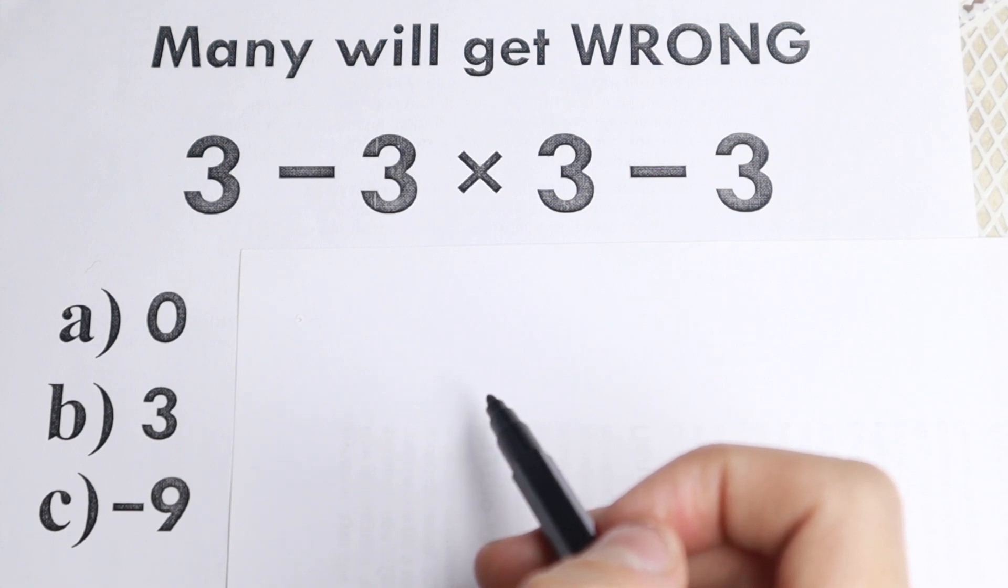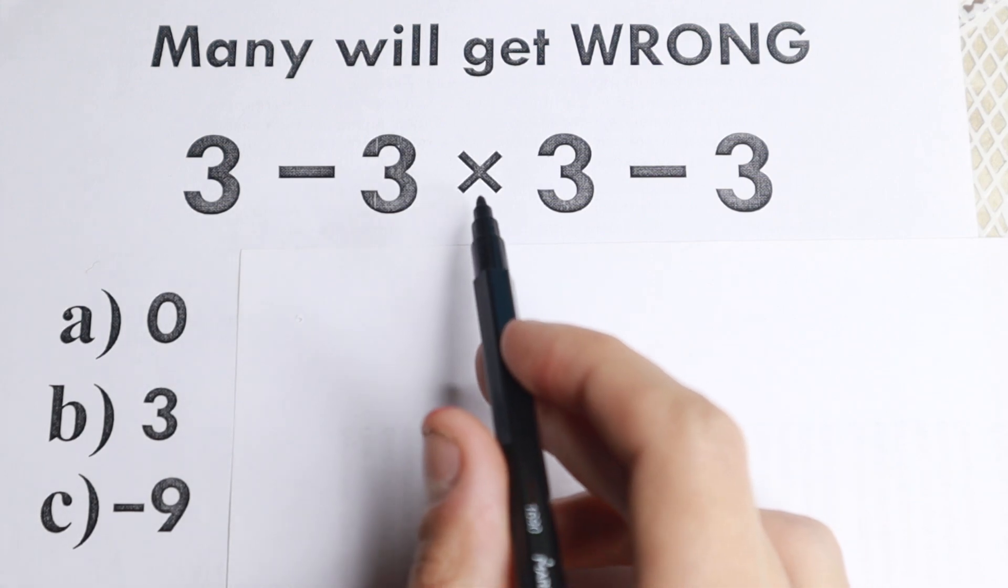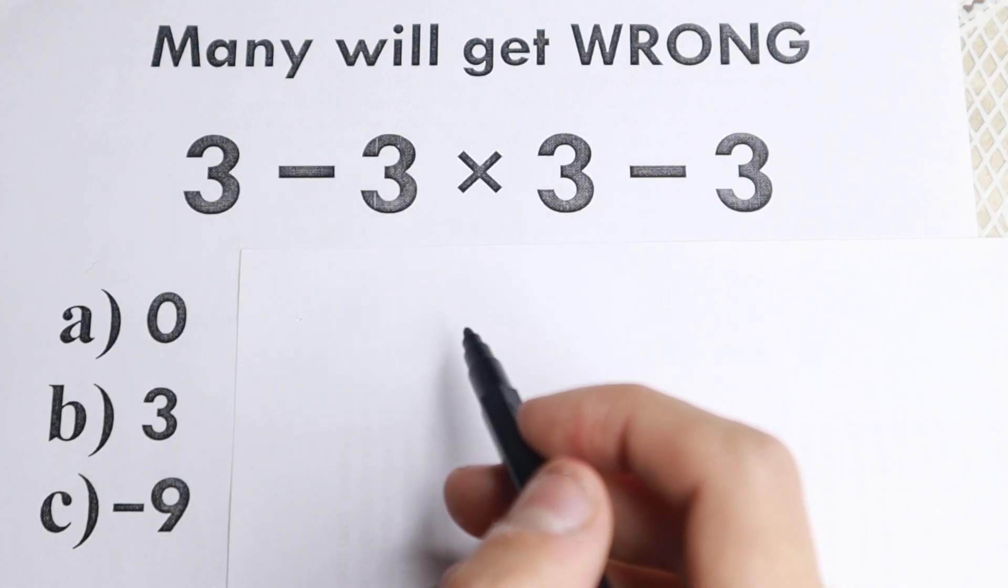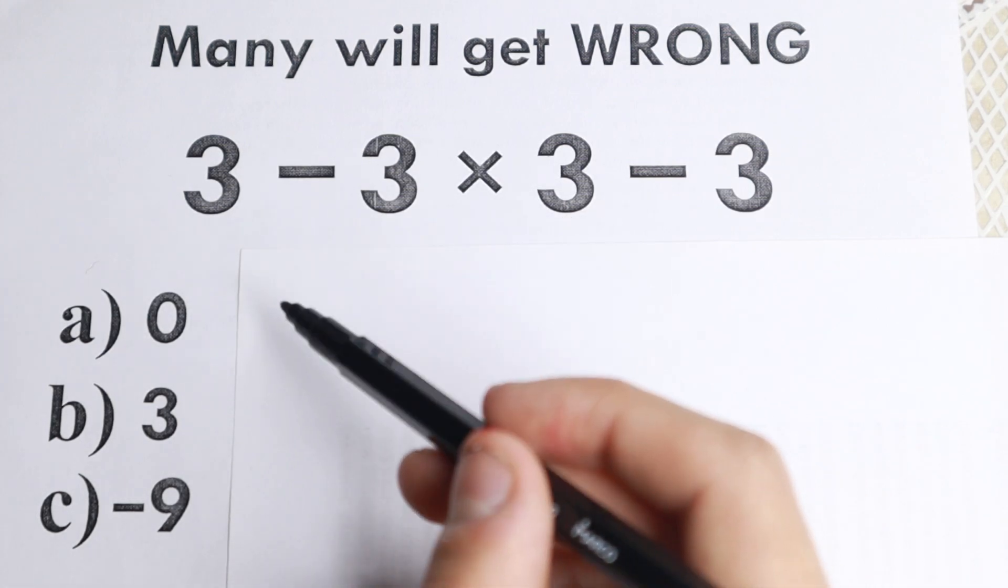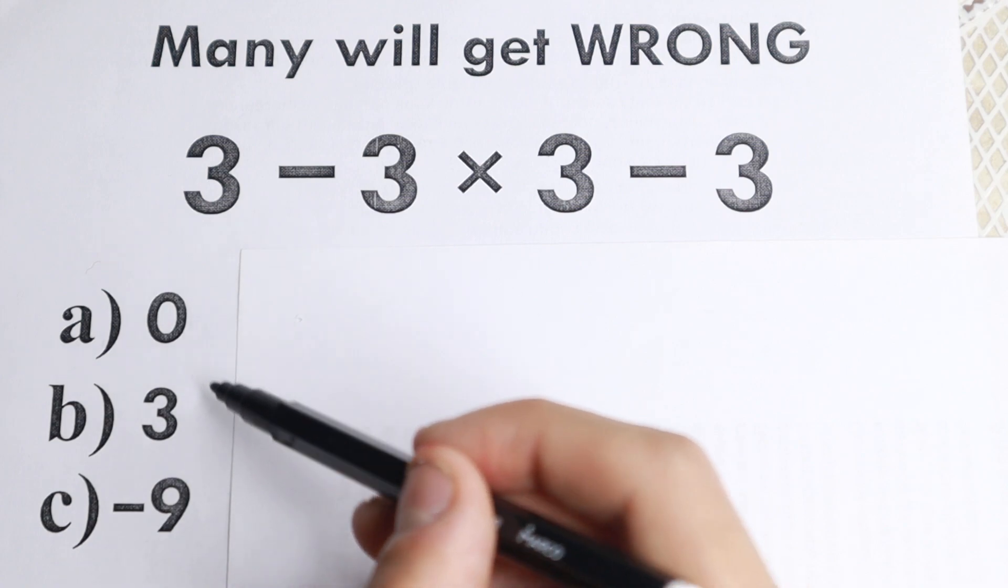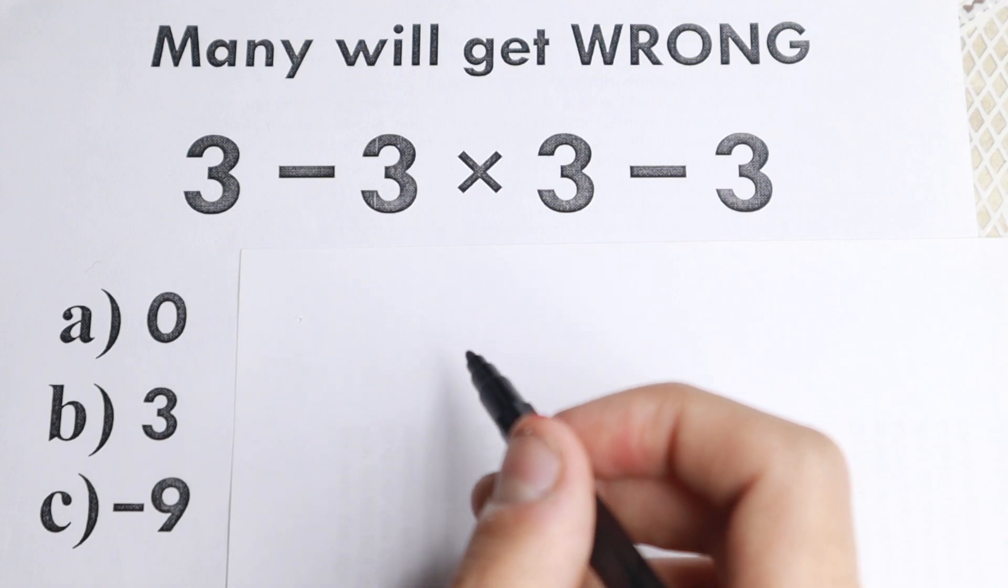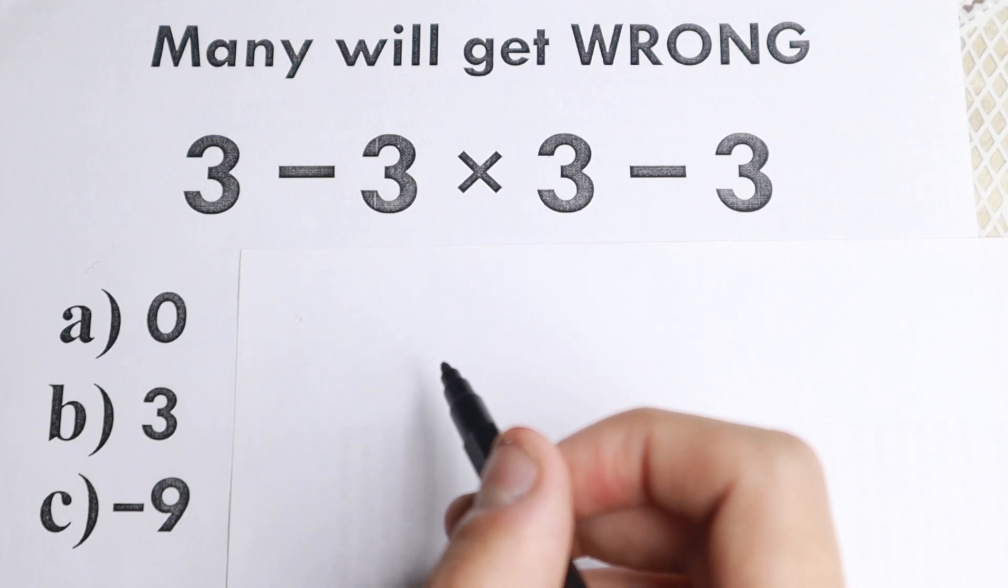Most of you are thinking, yes I can handle this. This is basic multiplication and subtraction, we don't have parentheses, so we can easily solve it. But let's try to solve it by yourself. I want you to choose your option: 0, 3, or minus 9, and write your option down in a comment. It will be really interesting to check our answer at the end of the video.